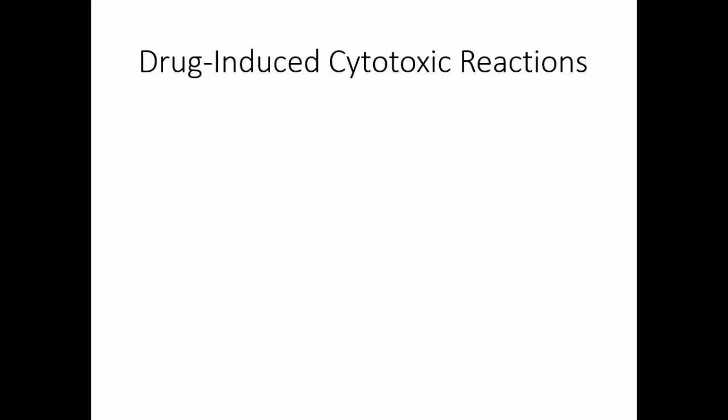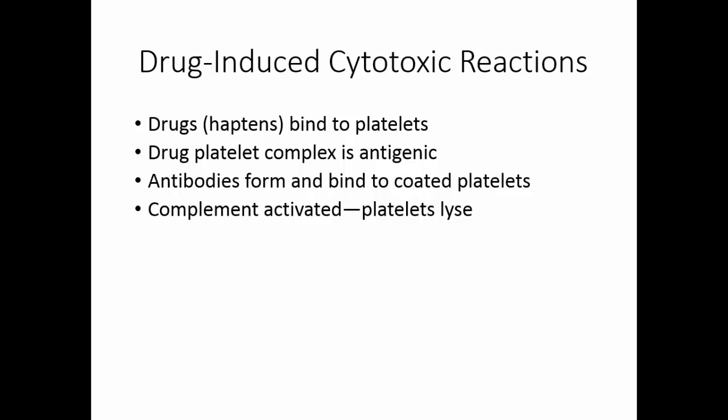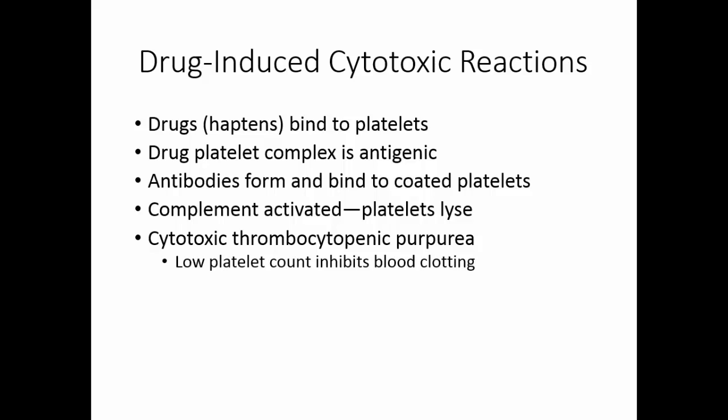Drug-induced cytotoxic reactions can also occur. Drugs are typically too small to be antigenic, but they can bind to cells. A common cell they bind to is platelets. Once you have this drug-platelet complex, it's large enough to be antigenic. Antibodies form and will bind to the coated platelets. Complement is activated by this immune complex and the platelets lyse. This is going to take the number of platelets down to a dangerously low number, and you get something called cytotoxic thrombocytopenic purpura. The low platelet count inhibits blood clotting, and purpura, or purple hemorrhages under the skin, may be seen.